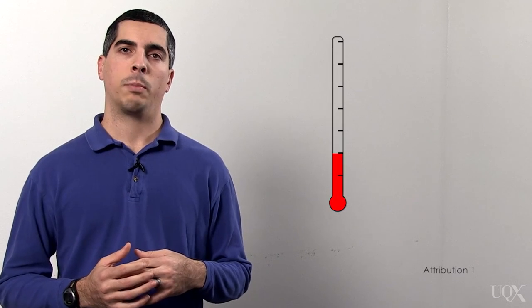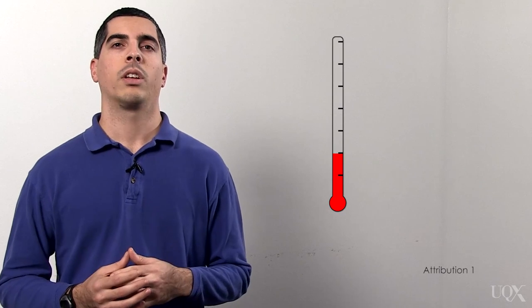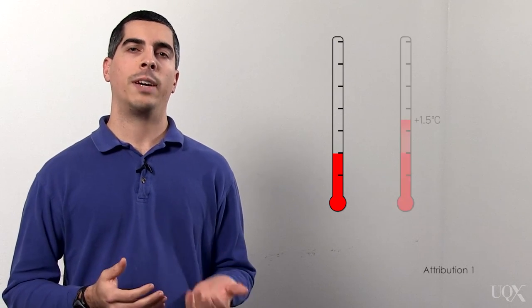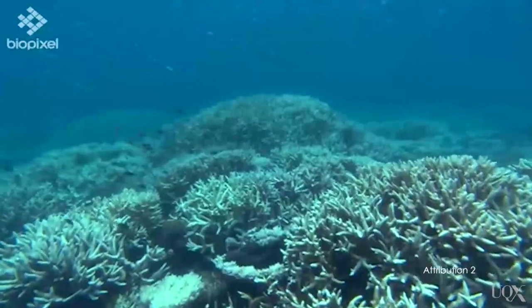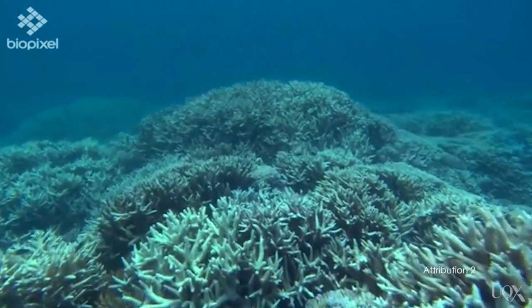So far, the Earth's average surface temperature has warmed almost one degree Celsius since the Industrial Revolution. Some significant adverse impacts are expected by the time we reach 1.5 degrees Celsius surface warming above pre-industrial temperatures. For example, that amount of global warming will worsen the problem of widespread coral mortality that we're already beginning to see.